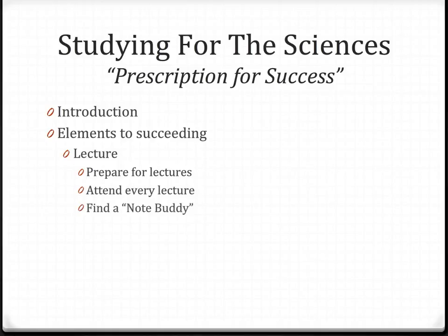Here's your prescription for success in studying for the sciences. Knowing how to approach the material is the first step in succeeding. The amount of material covered and the speed at which it is covered may seem overwhelming, but if you follow these guidelines, your stress level will decline as your success increases. There are three elements to succeeding in a science course: lecture, time management, and test preparation.